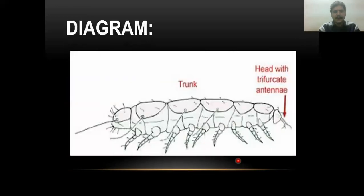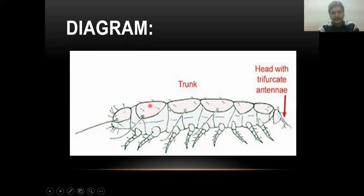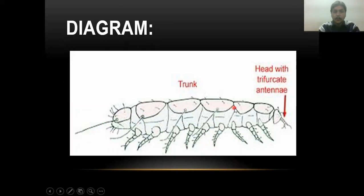Looking at the diagram, there is an elongated antenna and the exoskeleton plates, which are a prominent and distinctive feature present in these Pauropods. The trunk contains nine pairs of legs on 11 trunk segments.